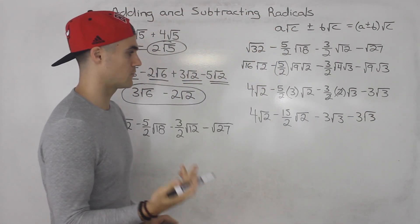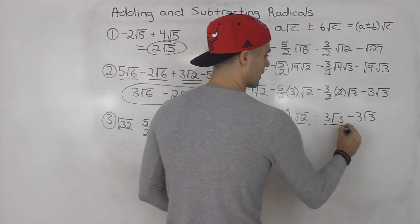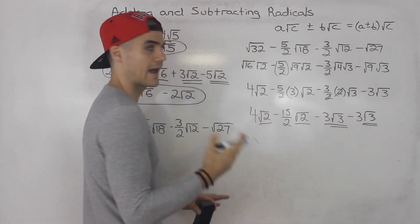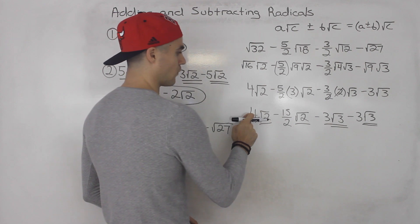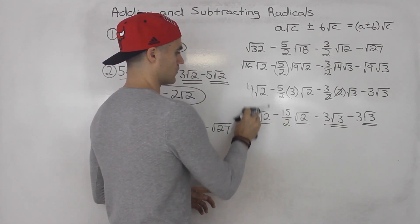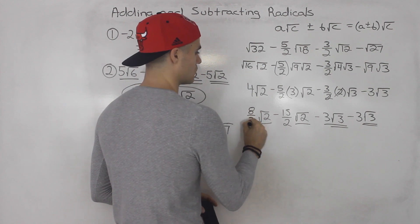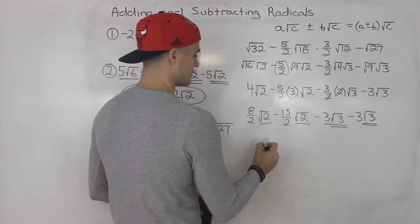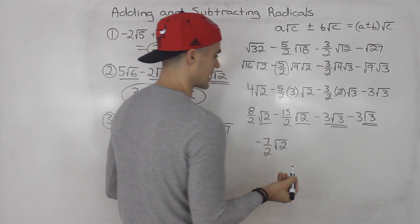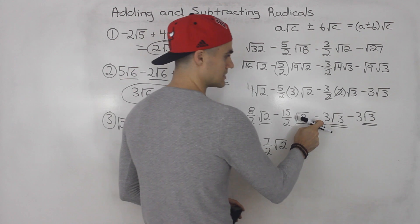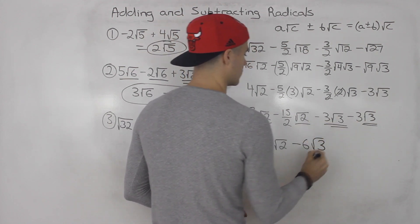Now notice that after simplifying we have like terms: root 2 and root 2, root 3 and root 3. So we add or subtract the coefficients in front. For root 2: 4 minus 15 over 2 — we change 4 into 8 over 2, so 8 minus 15 gives us negative 7 over 2 root 2. And for root 3: minus 3 minus 3 gives us minus 6 root 3. That's the final answer.